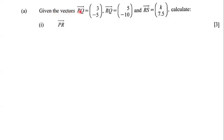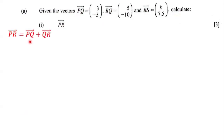Given the vectors PQ, RQ, and RS, calculate the vector PR. PR is going to be equal to PQ plus QR.